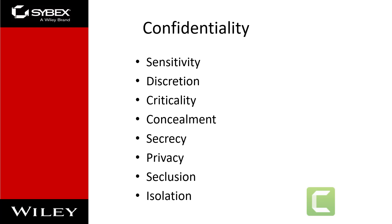Events that lead to confidentiality breaches include failing to properly encrypt a transmission, failing to fully authenticate a remote system before transferring data, leaving open otherwise secure access points, accessing malicious code that opens a backdoor, misrouted faxes, documents left on printers, or walking away from an access terminal while data is displayed on the monitor. Confidentiality violations can result from the actions of an end user or system administrator, or from an oversight in a security policy or a misconfigured security control.